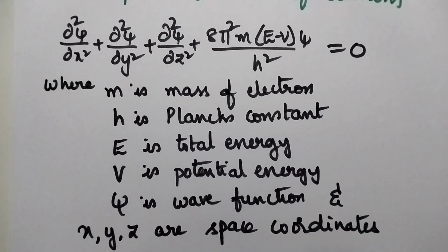Where m is mass of electron, h is Planck's constant, E is total energy, V is potential energy, psi is wave function, and x, y, z are space coordinates.